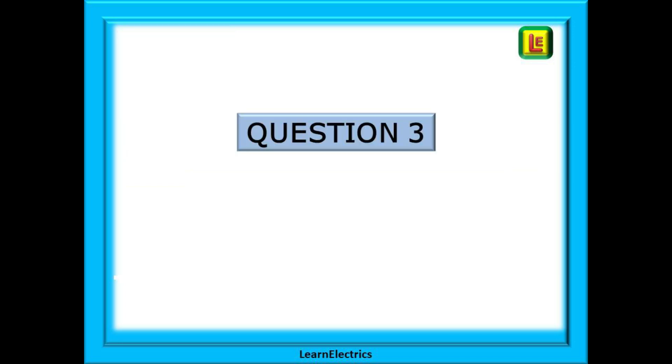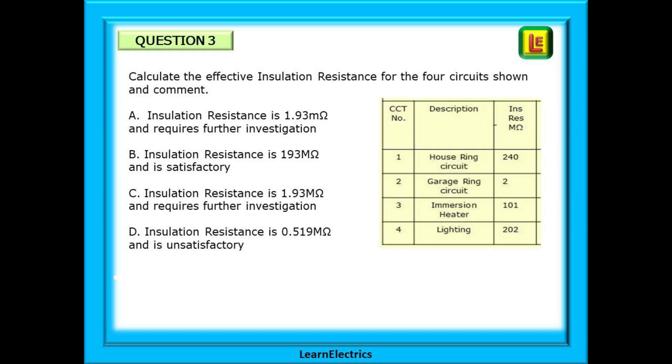Next is question 3 and one that is very likely to be asked. We are required to calculate the effective insulation resistance for the four circuits shown and to comment on our findings. The effective resistance is the value of all the parallel resistances in the installation. Again pause the video, do the calculation and choose an answer A to D.